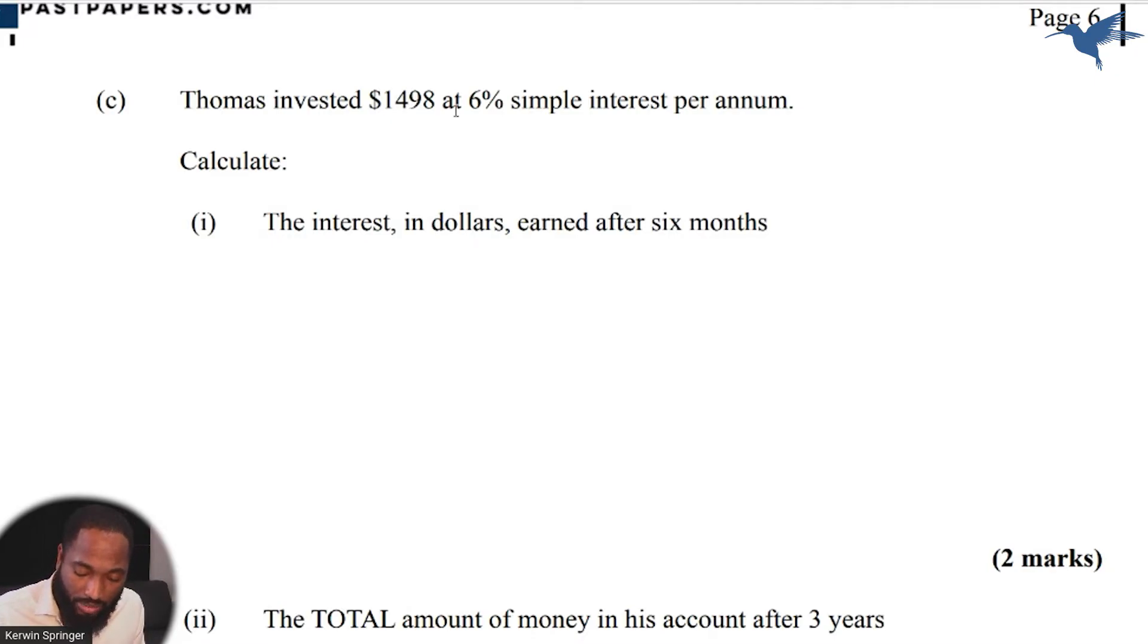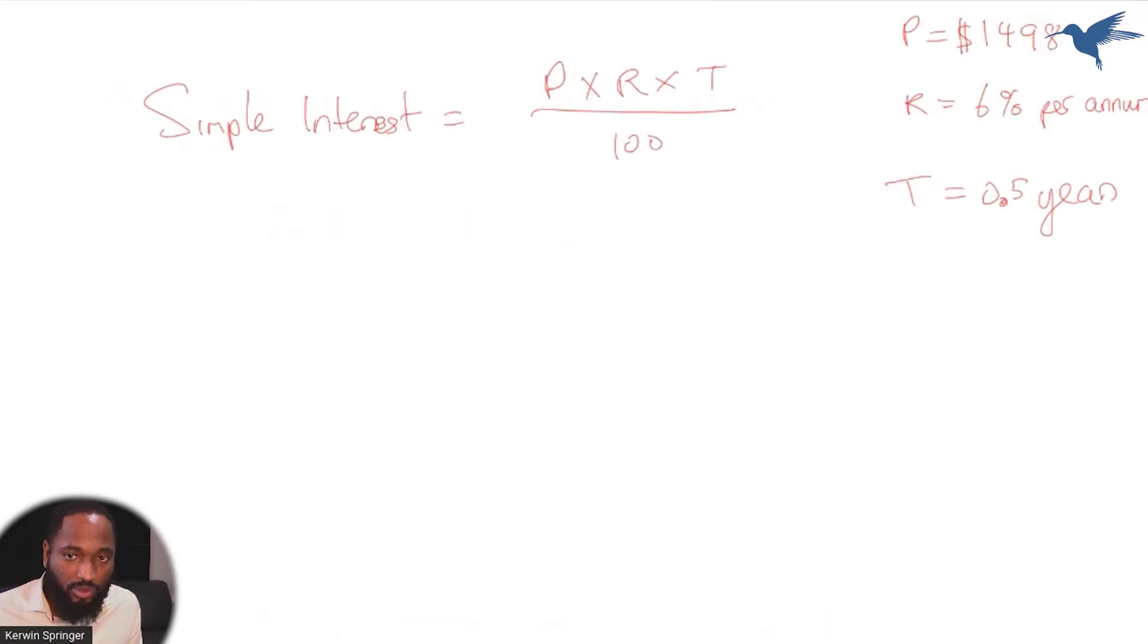Why am I saying the time is 0.5? I'm saying the time is 0.5 because the interest was given in terms of years, per annum. So if there's a time given, I should write 0.5. So let's see what I've written so far.